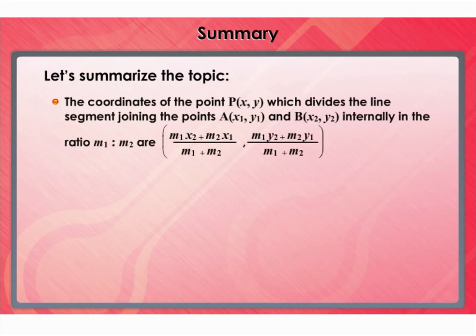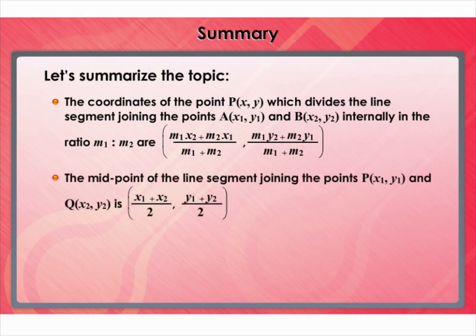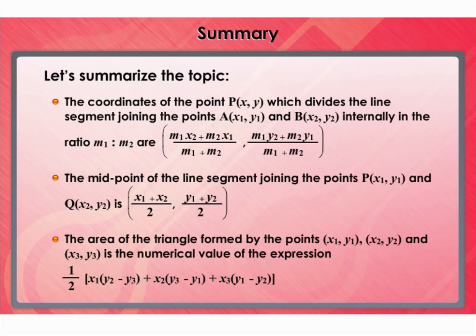Summary: The coordinates of the point P(x, y) which divides the line segment joining the points A(x₁, y₁) and B(x₂, y₂) internally in the ratio m₁:m₂ are given by the section formula. The midpoint of the line segment joining the points P(x₁, y₁) and Q(x₂, y₂) is given by the midpoint formula. The area of the triangle formed by the points (x₁, y₁), (x₂, y₂), and (x₃, y₃) is the numerical value of the expression.